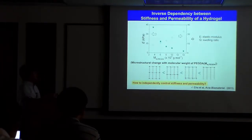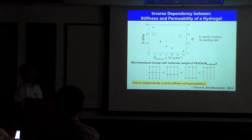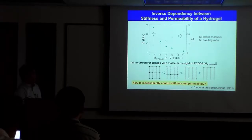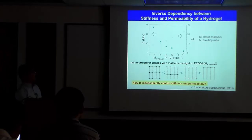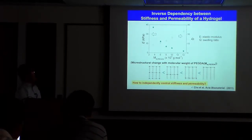Another approach we adopted was to control the inverse dependence between stiffness and permeability. Simply changing the cross-linking density of polyethylene glycol diacrylate — a polymer typically used for 3D cell culture — by varying concentration or molecular weight increases the elastic modulus linearly, representing increased stiffness. However, increasing cross-linking density simultaneously decreases the swelling ratio, which represents permeability. This is a typical inverse dependence between stiffness and permeability.